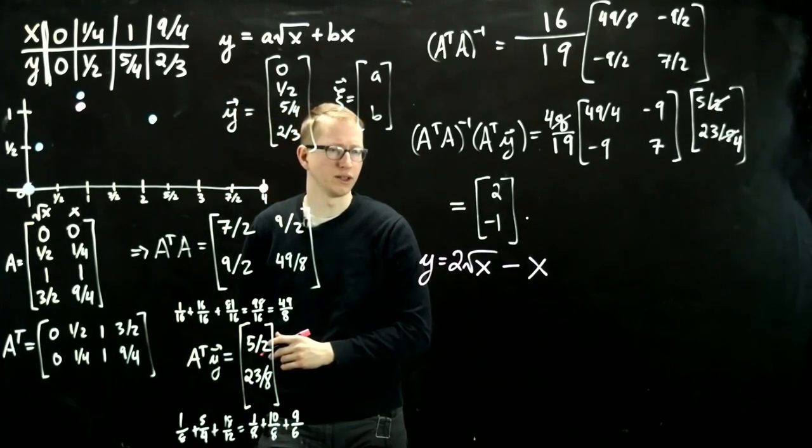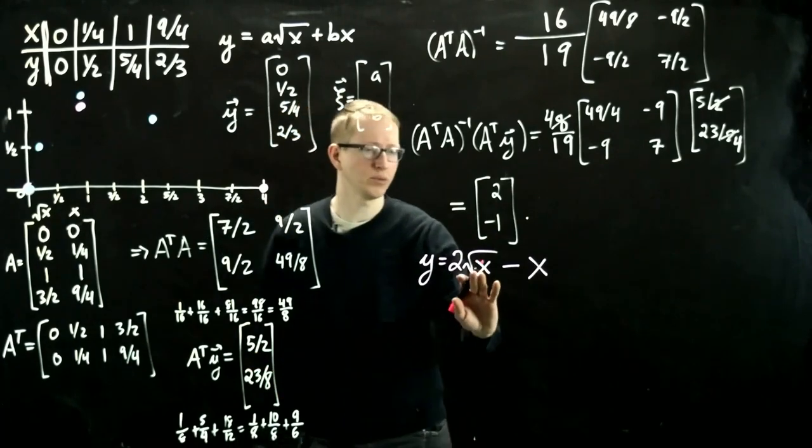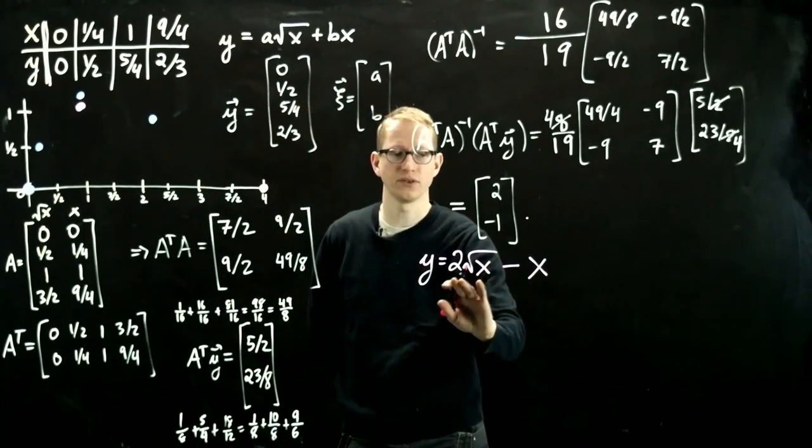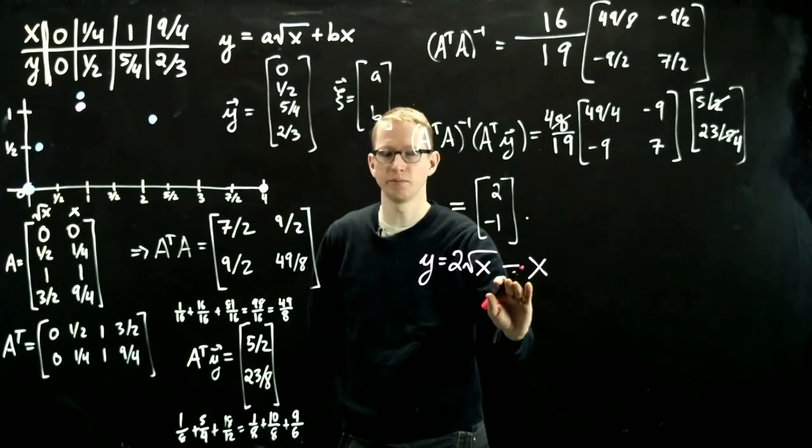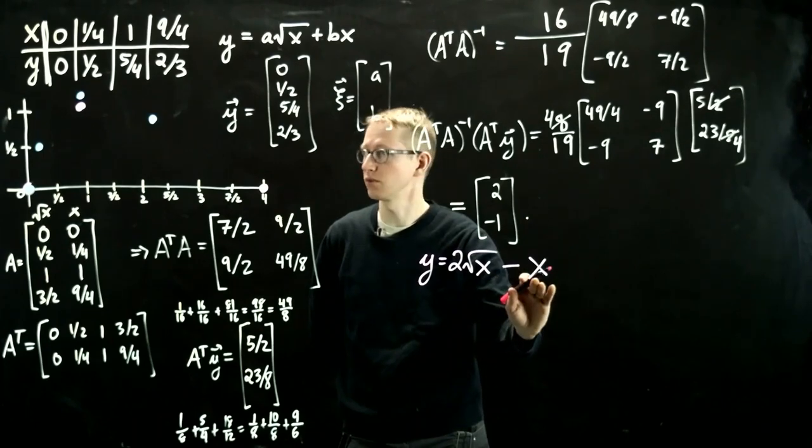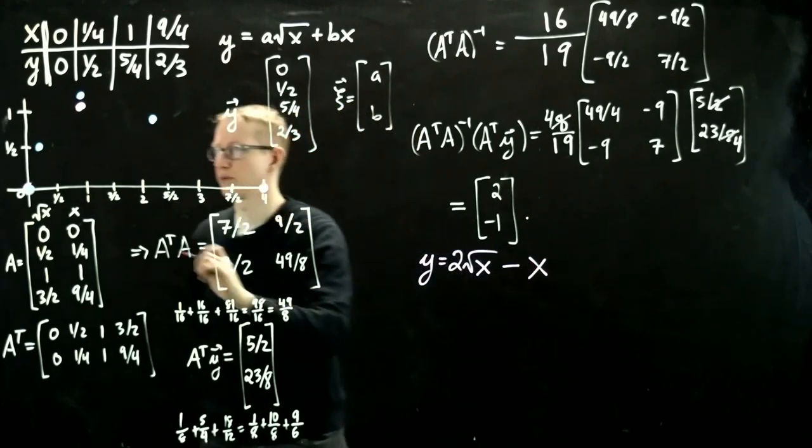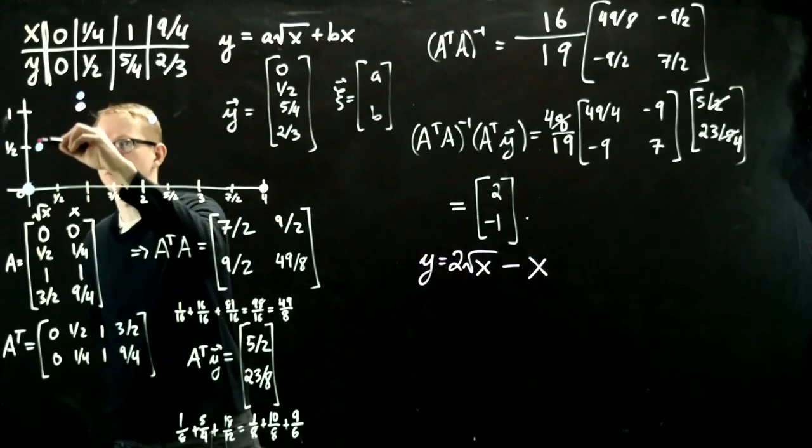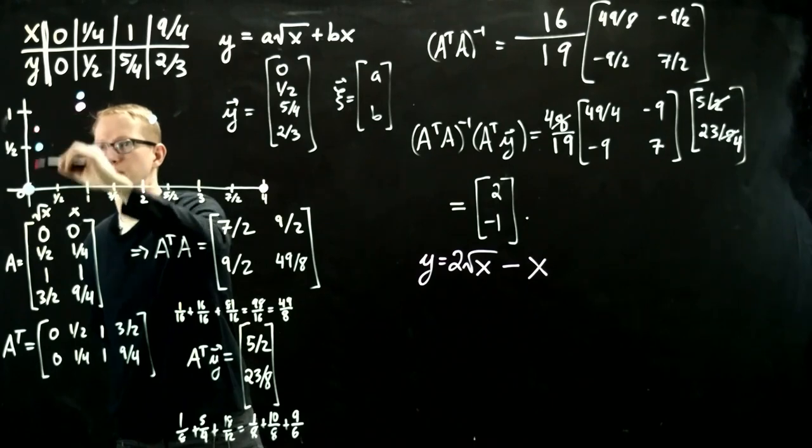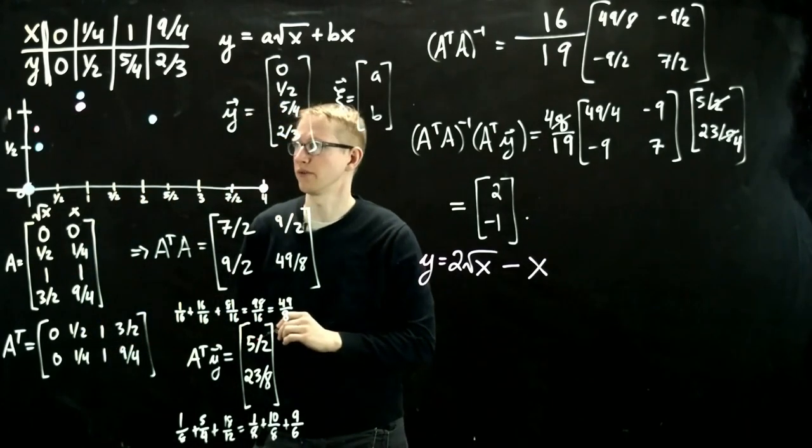Maybe even for, let's see, a fourth, is this going to be a nice number? If x is a fourth, this is a half. So this is 1. 1 minus a fourth is going to be 3 fourths. So at x equals 1 fourth, which is roughly here, we'll be at 3 fourths. That's kind of pretty high compared to this. That's maybe around here.